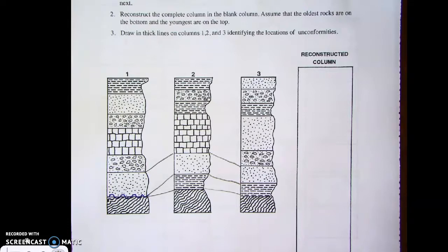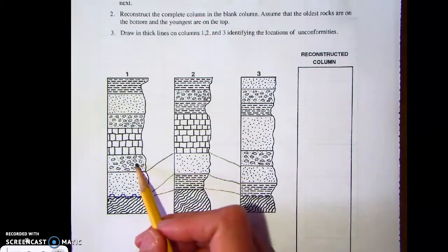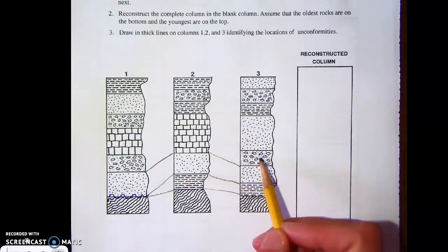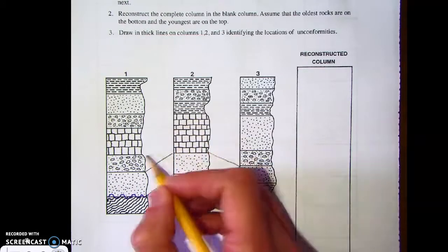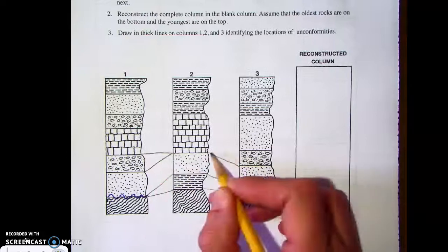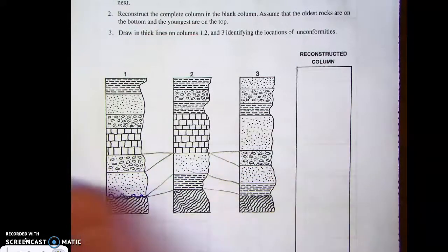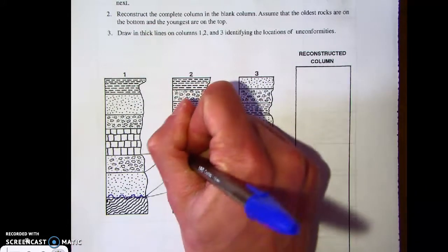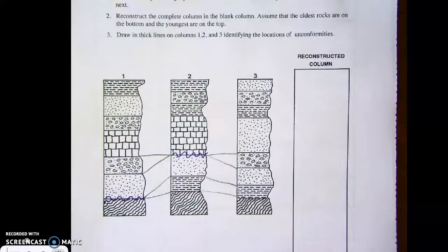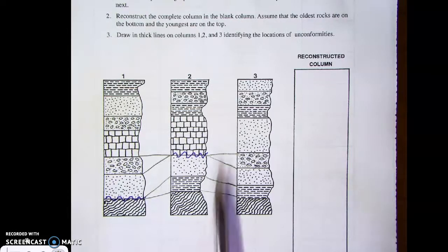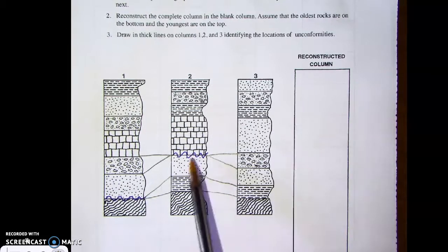Now if we look at column one and three, here we have conglomerate in one, conglomerate in three, but it's missing in two. So that means we have another unconformity, another area where weathering and erosion took place. We don't have that conglomerate layer there. It's not that it was never there, it's just that it's gone now. Weathering and erosion removed it. Again, another unconformity - missing rock.